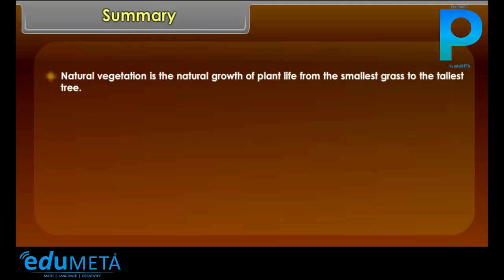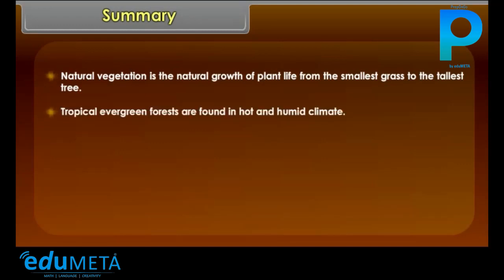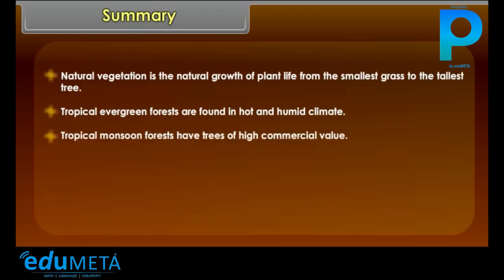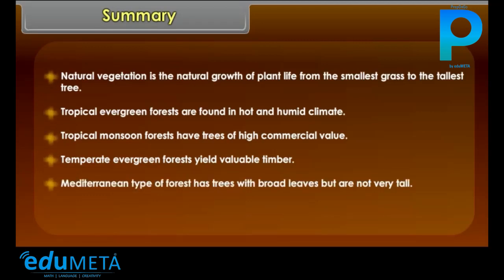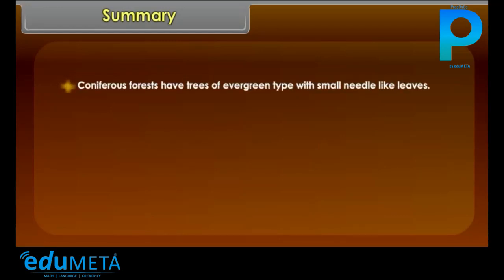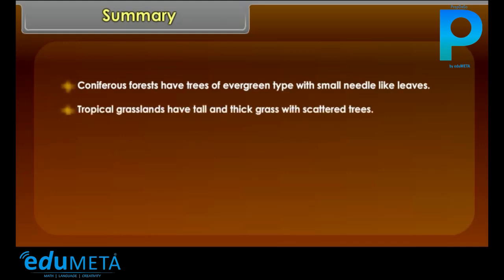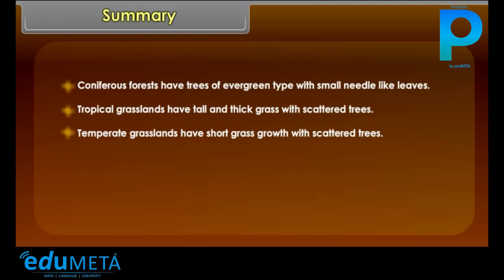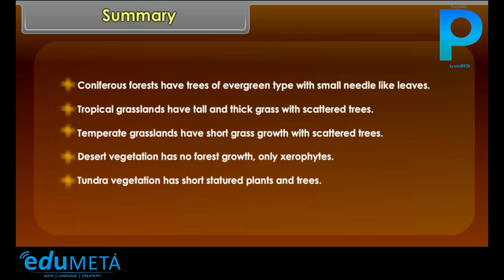Summary: Natural vegetation is the natural growth of plant life from the smallest grass to the tallest tree. Tropical evergreen forests are found in hot and humid climates. Tropical monsoon forests have trees of high commercial value. Temperate evergreen forests yield valuable timber. Mediterranean type forests have trees with broad leaves but are not very tall. Temperate deciduous forests have trees which shed their leaves in autumn and remain leafless in winter. Coniferous forests have evergreen trees with small needle-like leaves. Tropical grasslands have tall and thick grass with scattered trees. Temperate grasslands have short grass with scattered trees. Desert vegetation has no forest growth, only xerophytes. Tundra vegetation has short-statured plants and trees.